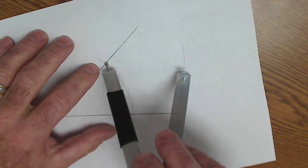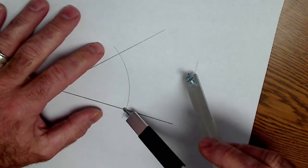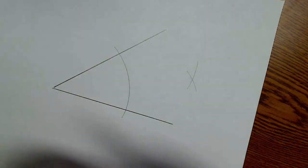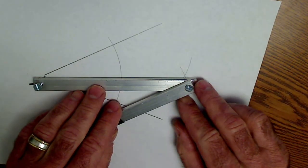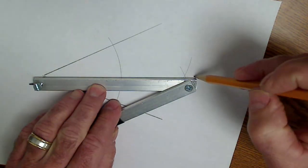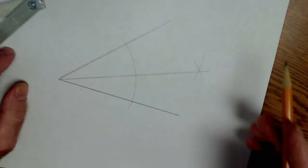Create another set of arcs from those points of intersection. Then use my straight edge to connect the vertex of my angle through that point of intersection. That's my angle bisector.